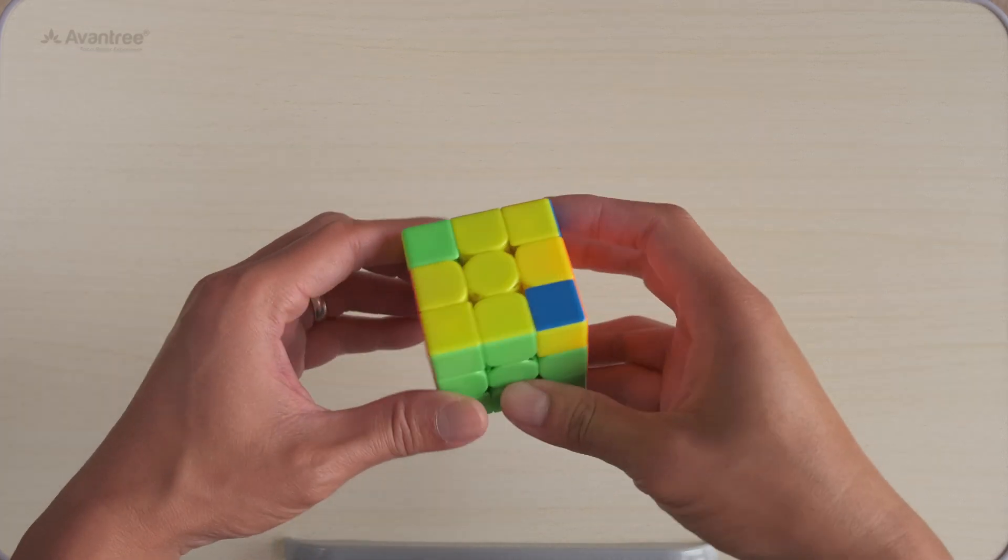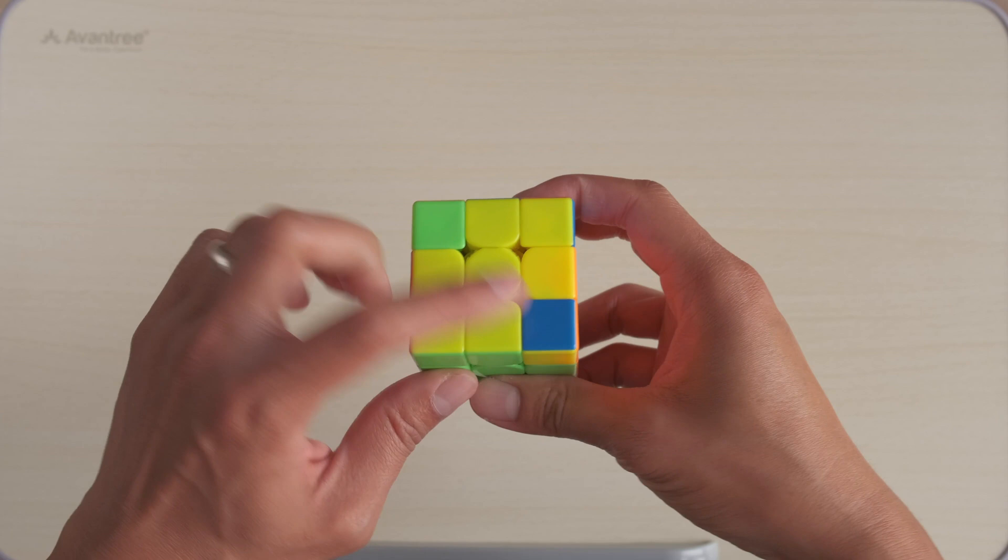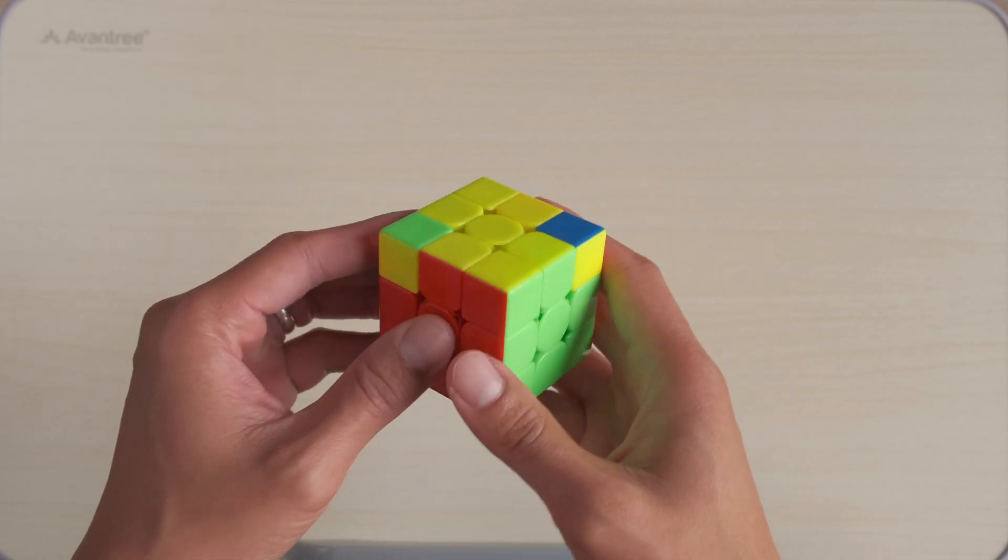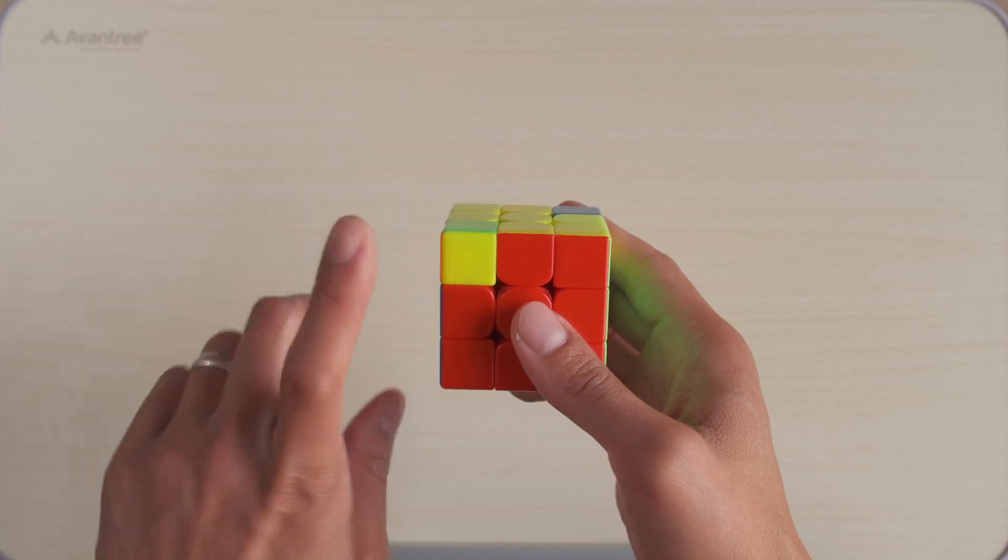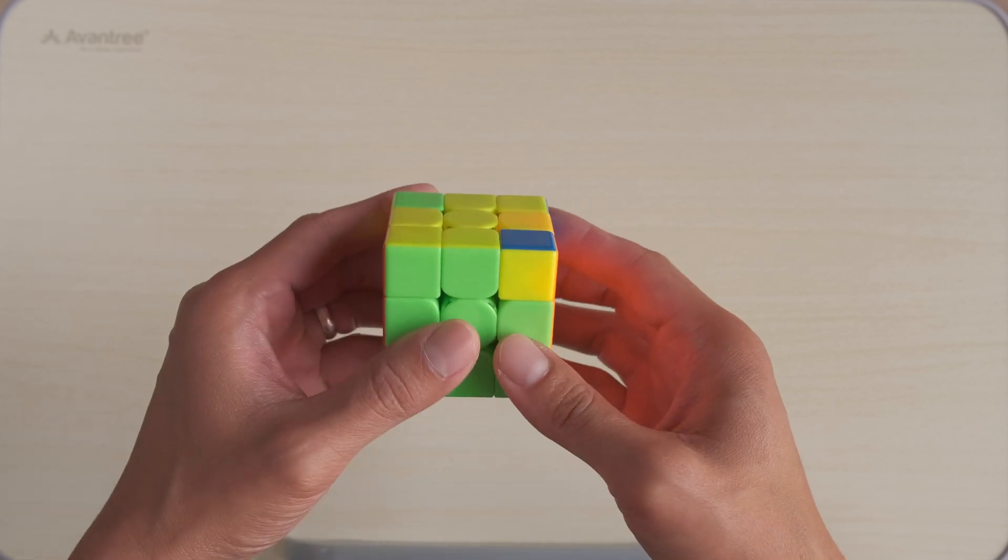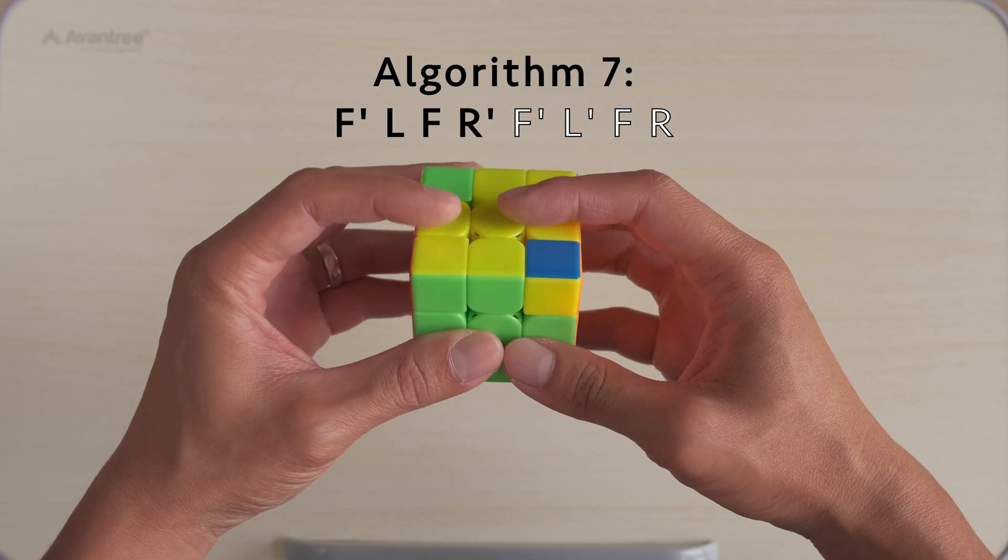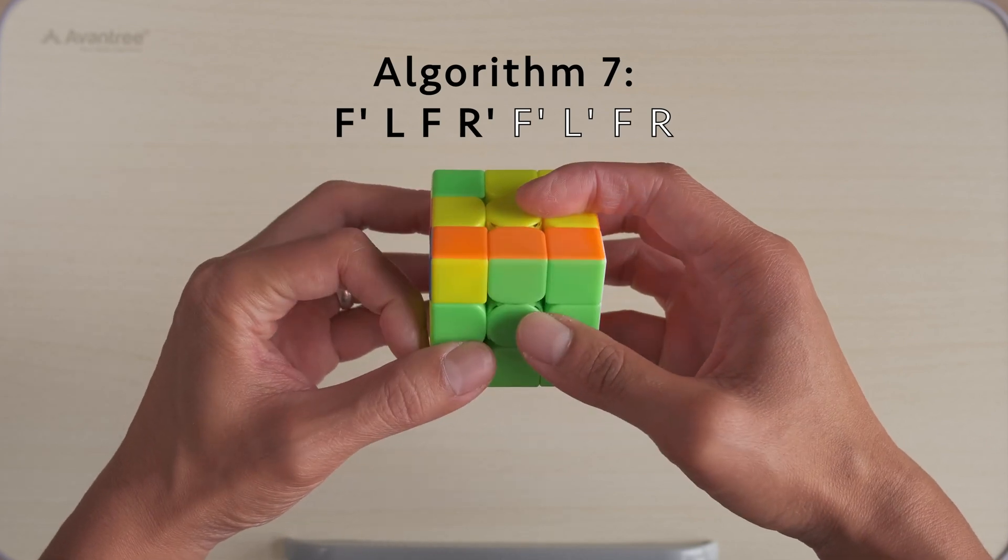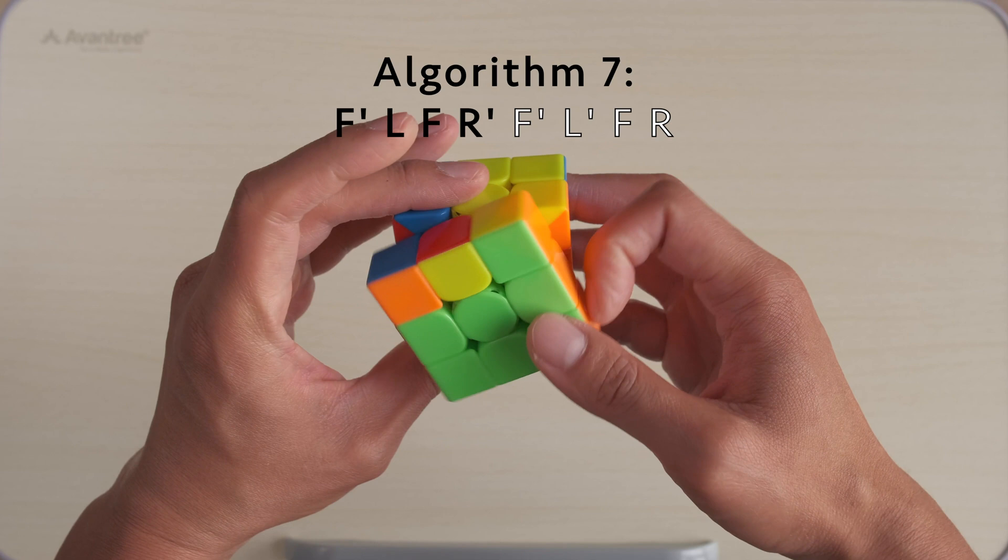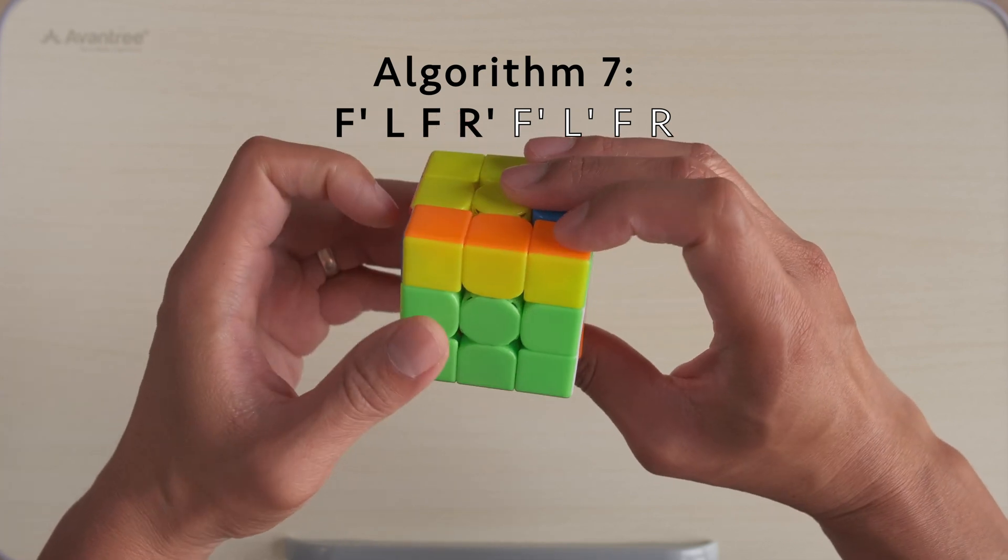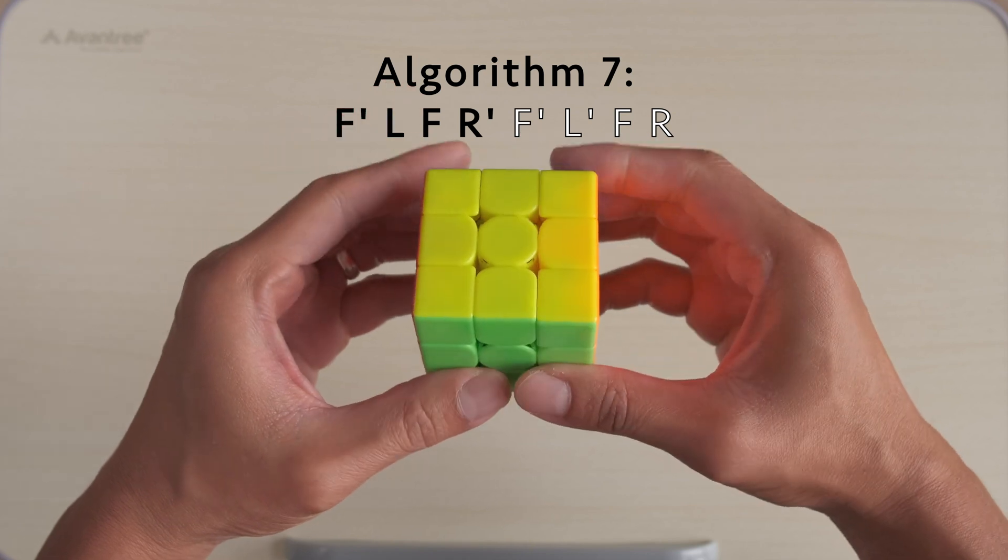Here is our seventh and final pattern. Two corner pieces are missing, and in order to do the algorithm, we need to place the yellow piece on the right. Here is the algorithm: F', L', F, R, F', L, F, R'.